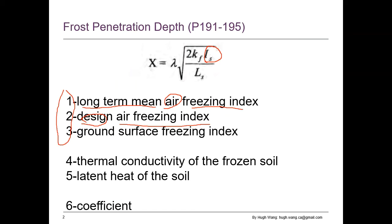After that, we need to convert the air freezing index into a ground freezing index. Then the fourth step involves the estimate of the thermal conductivity of the frozen soil. The fifth step is to estimate the latent heat of the frozen soil. And the last step is to estimate the lambda coefficient.